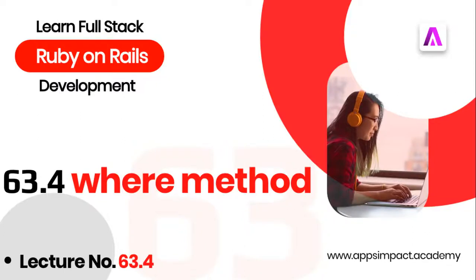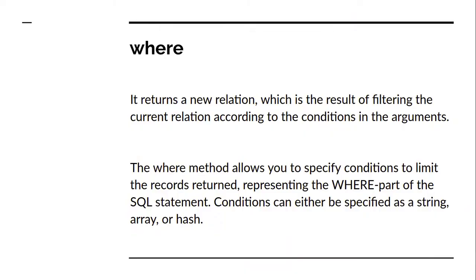Hey guys, welcome back. This is the fourth part of lecture number 63 from our bootcamp series. In this lecture we will discuss the where query method — this is a mostly used method and we need to understand it very carefully and deeply so we can write better queries in Rails. A where method returns a new relation which is the result of filtering the current relation according to the condition in the argument. The where method allows you to specify conditions to limit the records returned, representing the WHERE part of the SQL statement.